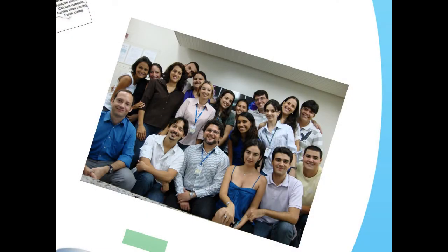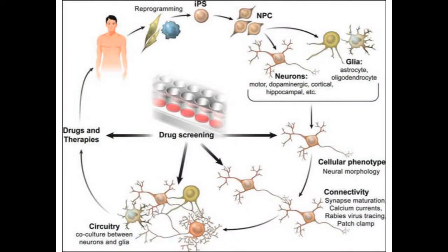So this is the group of the lab. And our goal now is try to do what we call high throughput screening. Try to get cells from the patient, transform the cells in neurons and then test several drugs. And then try to improve some of the phenotypes that we are seeing in the cells and eventually go back to the patient. Let's see if it works.